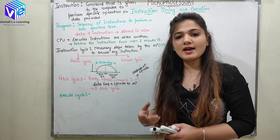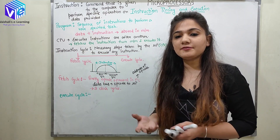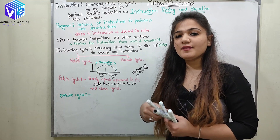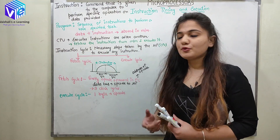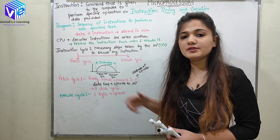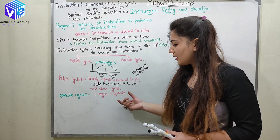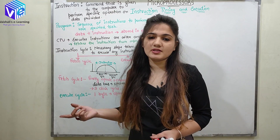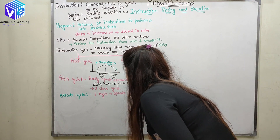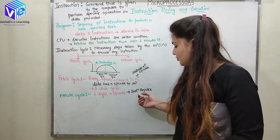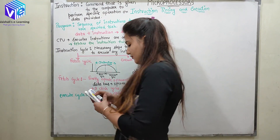After the fetch cycle, we have the execute cycle. Instructions can be 1 byte, 2 byte, or 3 byte. The first byte contains the opcode. The opcode is the decoded version of the instruction — it tells what the user wants to do. The opcode is sent to the instruction register in the microprocessor, and instruction decoding and execution happen in one clock cycle.